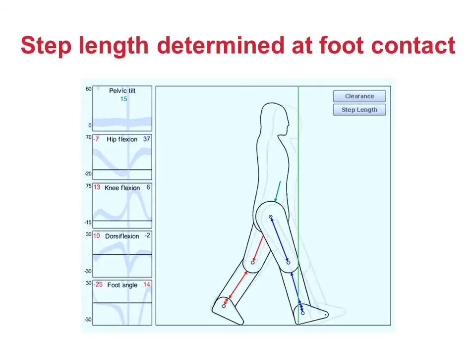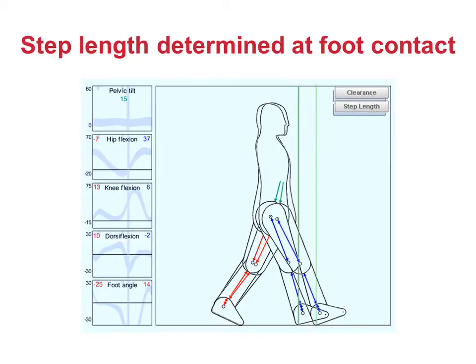Some things are quite obvious. The more you flex the leading hip, the longer the step length is going to be. The more extended the trailing hip, the longer the step length is going to be. In fact, if you think about it, what is important is not the individual hip angles, but the angle between the thighs at the moment of foot contact.